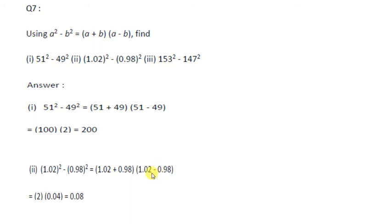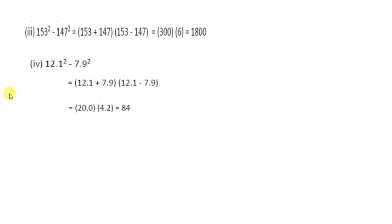Third is 153² - 147². In place of A you have 153, in place of B you have 147. So in the given identity's right hand side, replace A with 153 and B with 147. Adding these gives 300, subtracting gives 6. Finally, multiply these to get 1800.